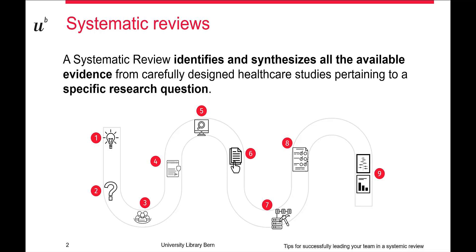Once all the literature is identified, researchers need to screen it, extract the data that will answer the question of the project, and evaluate the quality of the evidence included. Finally, they provide a summary of the evidence — either as a qualitative summary or as a quantitative summary in a meta-analysis.